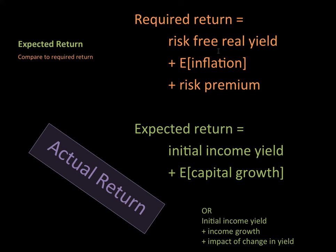Required return consists of the risk-free real yield plus expected inflation plus a risk premium. Your risk-free yield is a theoretical amount, but we normally take the interest rate you'd get in a bank where it's almost guaranteed to get that money back. For example, if banks are giving 6%, then your risk-free yield will be 6%. If inflation is going to grow by 2%, then that 2% will be the expected inflation. And then the risk premium is that additional amount that the investor requires for taking on risk.